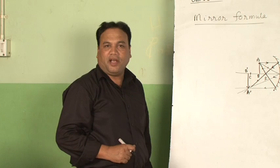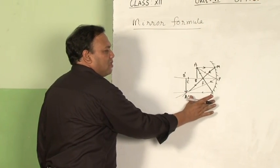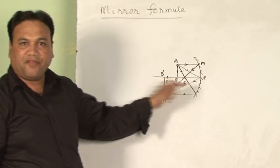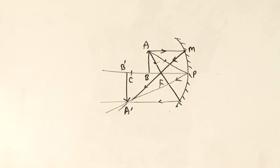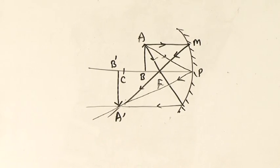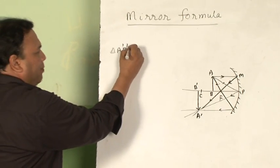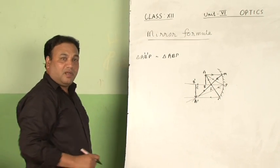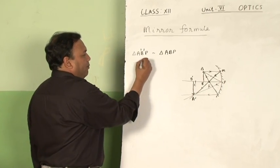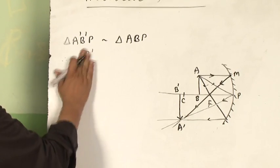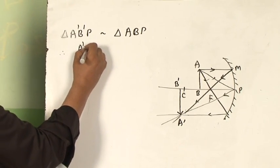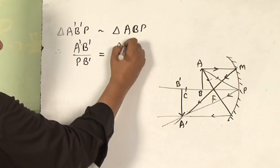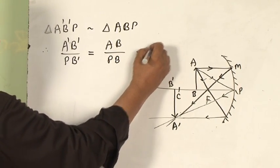Let me derive the mirror formula. The diagram shows formation of a real image when the object is between C and F. In this diagram, triangles A-dash B-dash P and ABP are similar. Therefore, A-dash B-dash upon AB equals PB-dash upon PB — call this equation 1.